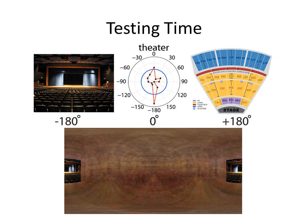During testing, given a limited field-of-view photo as input, our model recognizes the place category and produces a compass-like prediction of the observer's viewpoint. By superimposing the testing view on an average panorama of many theaters, we can automatically predict the possible layout that extends beyond the available field of view.